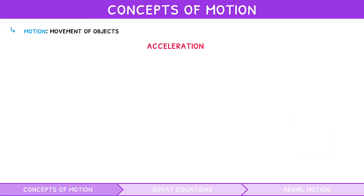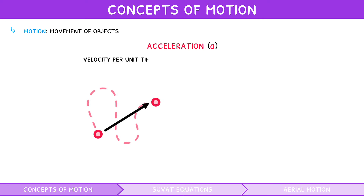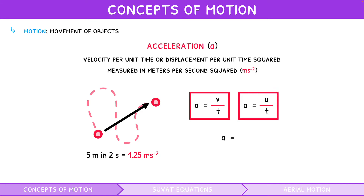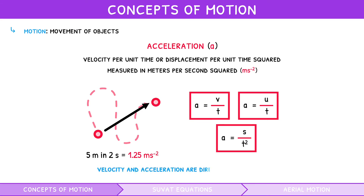Acceleration, denoted as a, is defined as the velocity per unit time and is measured in metres per second squared. It can be expressed using the equation a equals v divided by t, or a equals u divided by t, or a equals s divided by t squared. Note that velocity and acceleration are derived from displacement and thus must be direction dependent.